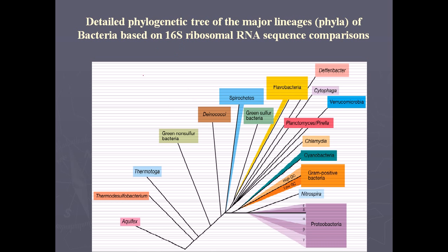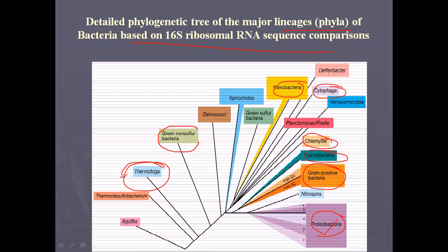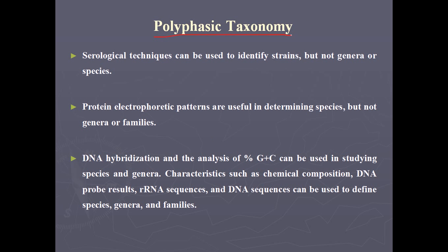Using these techniques, a detailed phylogenetic tree — a lineage of bacteria based on 16S ribosomal RNA — can be constructed. From it, we find that Cytophaga and Flavobacteria are closely related, Chlamydia is more related to cyanobacteria, and these are related to gram-positive bacteria and Proteobacteria. Thermotoga is totally different, and green non-sulfur bacteria are related to Thermotoga. This is how we use 16S rRNA technique to understand bacterial relationships.